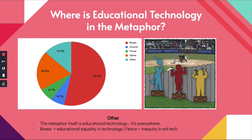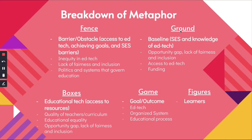Some other interpretations were that edtech is everywhere in the metaphor. Some were specific and believe the boxes represented educational equality in technology and the fence represented inequity in educational technology.